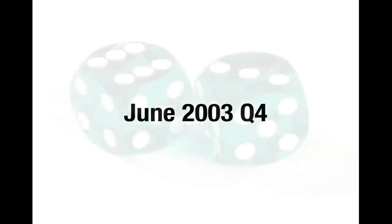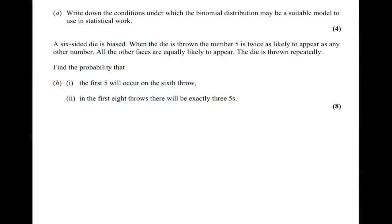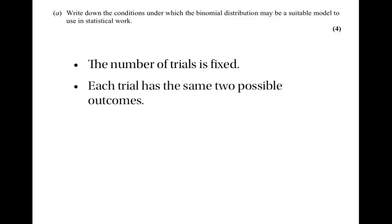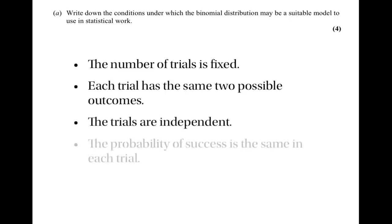The last question is from the June 2003 paper about biased dice. The first part asks for the conditions under which the binomial distribution is a suitable model — worth four marks, so there are four conditions. First, the number of trials is fixed. Second, each trial should have the same two possible outcomes. Third, the trials must be independent. Fourth, the probability of success must be the same in each trial.